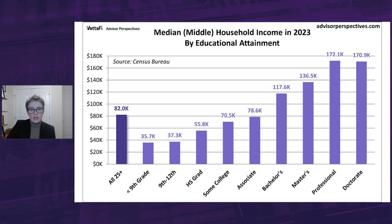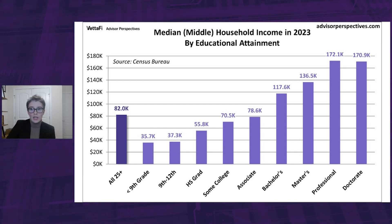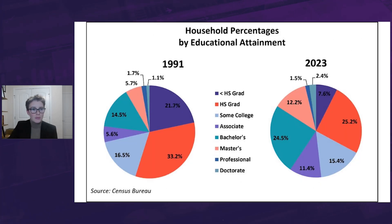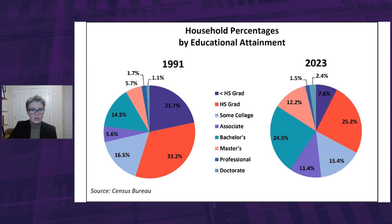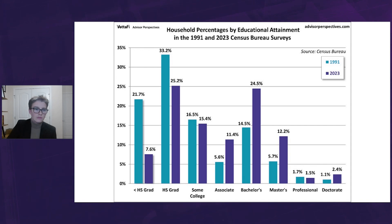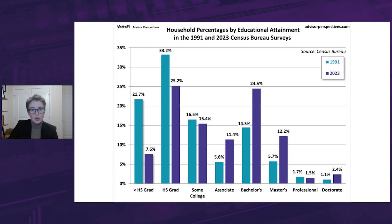The educational attainment of householders has increased over the time frame of our data — meaning that since 1991, more people are getting higher levels of education. Here's a pair of pie charts that highlights this difference. On the left, we see the breakdown from 1991, and on the right, it shows the breakdown from 2023. Just by glancing, it's easy to see which slices have grown and which have shrunk. This column chart gives us a clearer sense of just how much the individual cohorts have changed from 1991 to 2023.